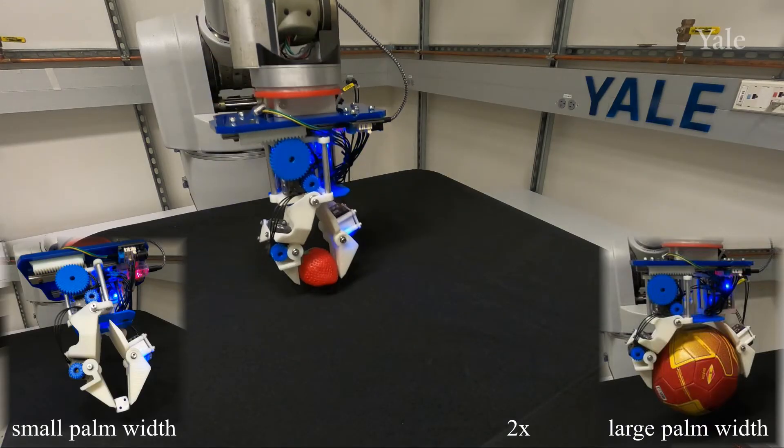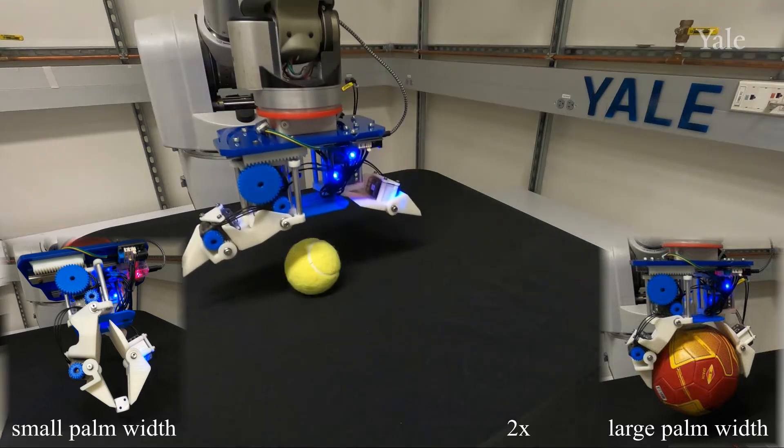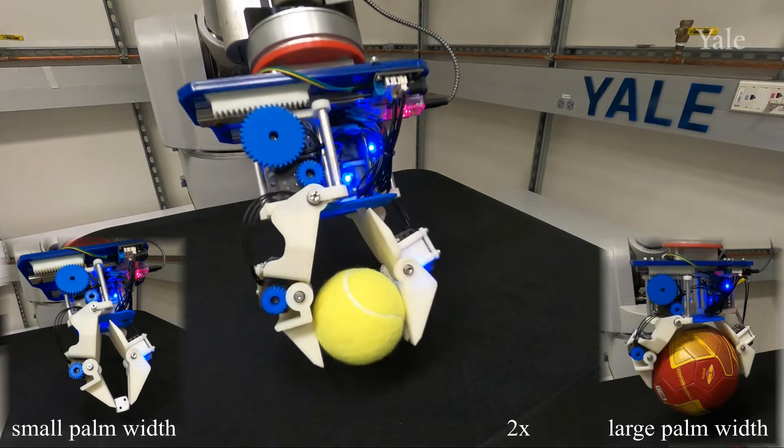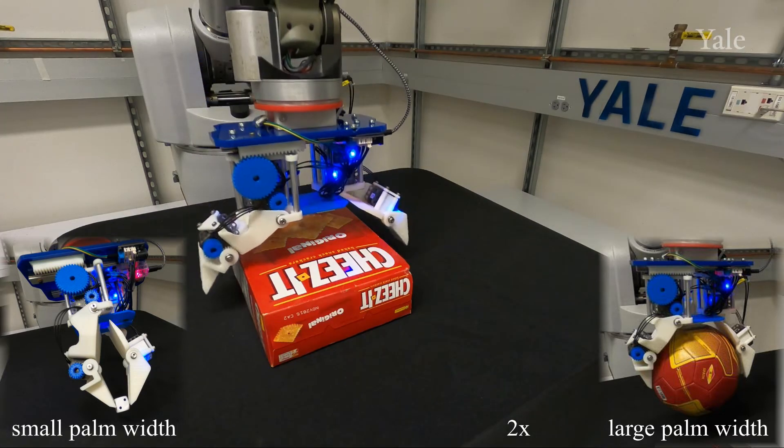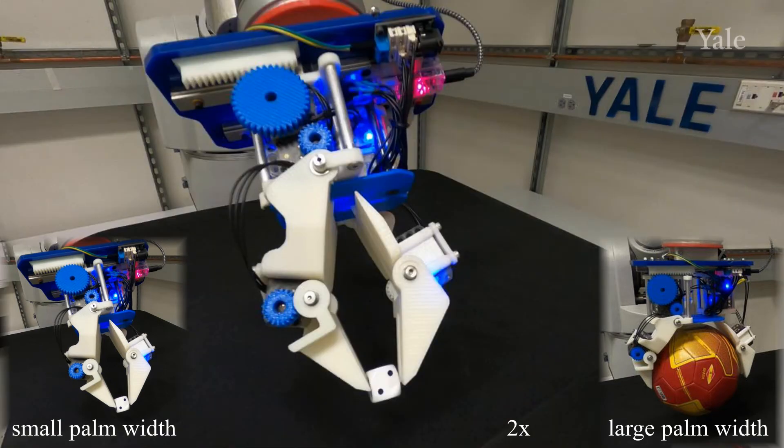The hand is capable of grasping a large variety of objects with different shapes and sizes. In this clip, we demonstrate its capabilities with various objects included within the Yale, CMU, Berkeley object and model set.